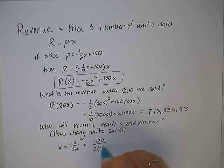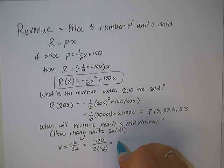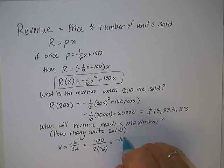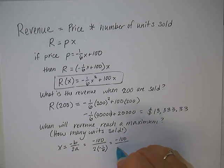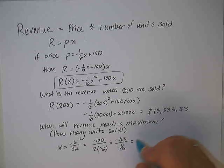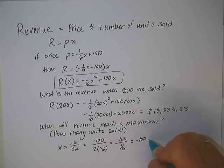The B is the number next to X, that would be 100. So negative 100 over 2 times A, and A is our negative one-sixth. That means we're taking negative one-third and dividing by negative one-third.